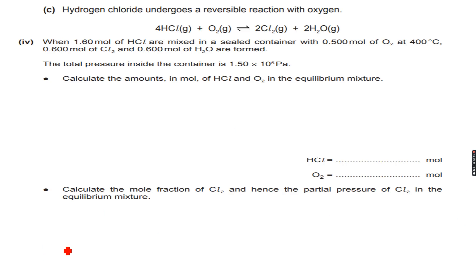Okay, so hydrogen chloride undergoes a reversible reaction with oxygen. 4 HCl gas plus O2 gas gives 2 Cl2 gas plus 2 H2O gas. So all gases in this reaction. When 1.6 mol of HCl are mixed in a sealed container with 0.5 mol of O2 at 400 degrees Celsius, 0.6 mol of Cl2 and 0.6 mol of H2O are formed. So this is the amount in the equilibrium mixture, and the total pressure inside the container is 1.5 into 10 to the power of 5 Pa.